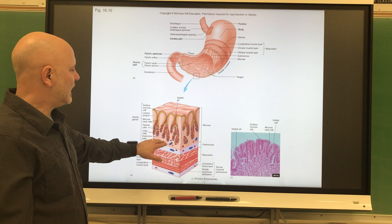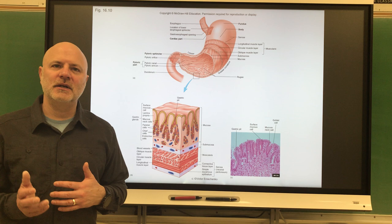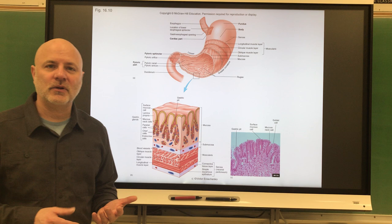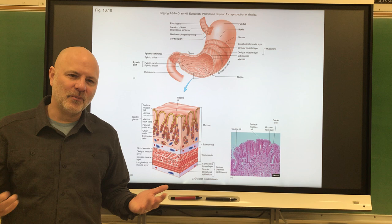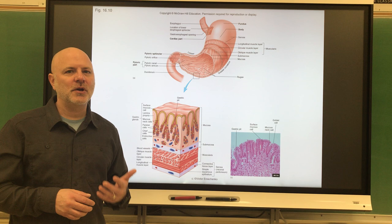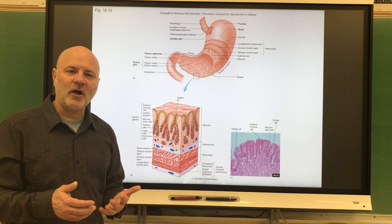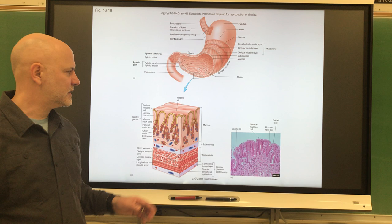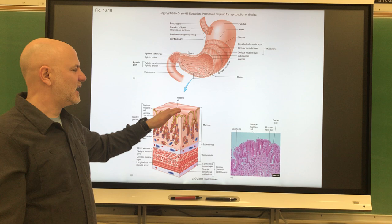Gastric glands are found in the mucosa of the stomach and secrete gastric juices. That juice is composed of several things. One is hydrochloric acid — our stomach pH is about one to two — and it's there to kill off microorganisms in swallowed materials and break down some food. Also secreted is pepsin, an enzyme that breaks down proteins, so protein chemical digestion starts in the stomach. Next is intrinsic factor, which helps the small intestine absorb vitamin B12. Finally, mucus is secreted — thicker and more alkaline than elsewhere in the body — to help protect the stomach lining.